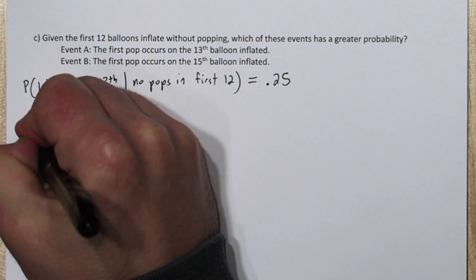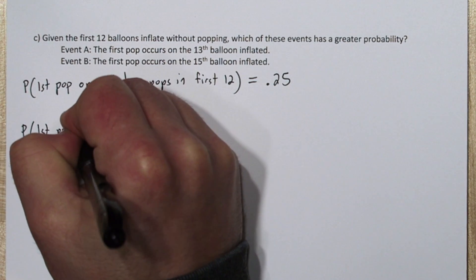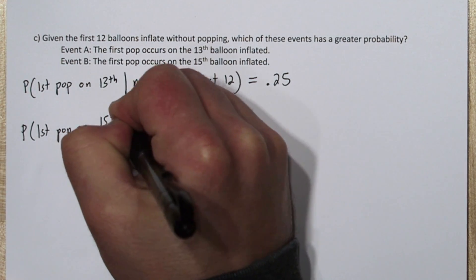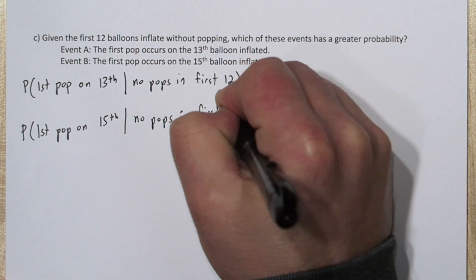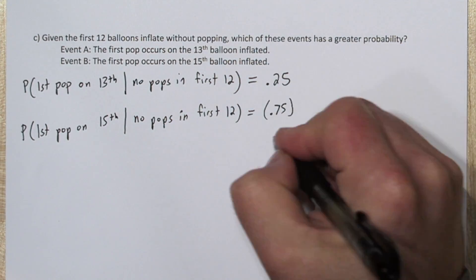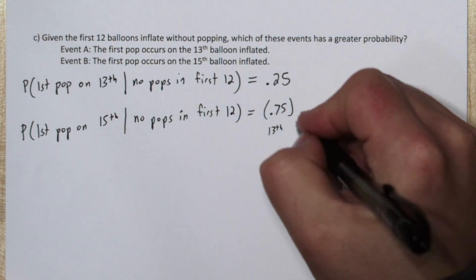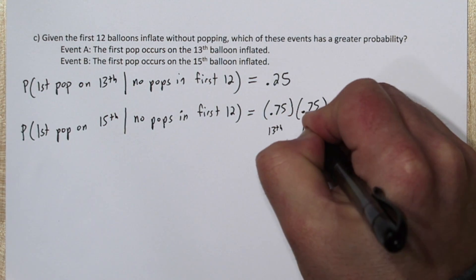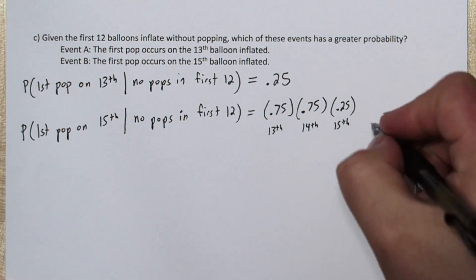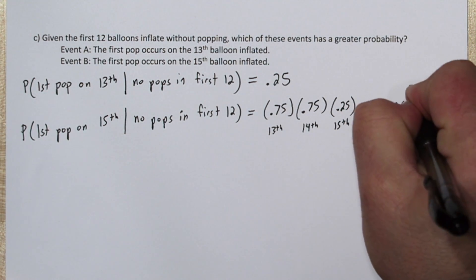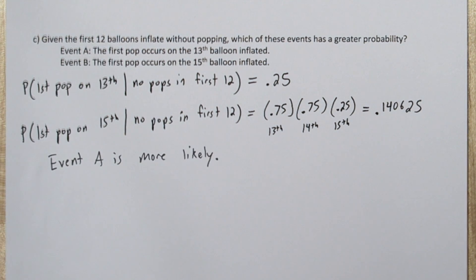Now for our first pop to occur on the 15th balloon, given the previous 12 did not pop, we have to have no pop on the 13th balloon, no pop on the 14th balloon, and then a pop on the 15th balloon. So since they're independent events, we can multiply 0.75 times 0.75 times 0.25, and we get 0.140625. So event A is nearly twice as likely to happen.